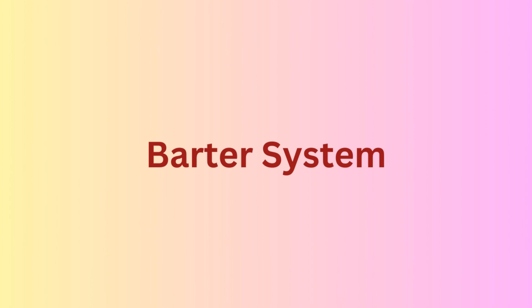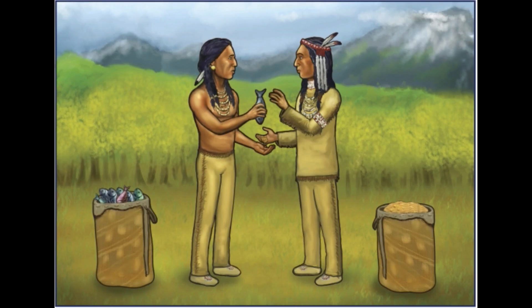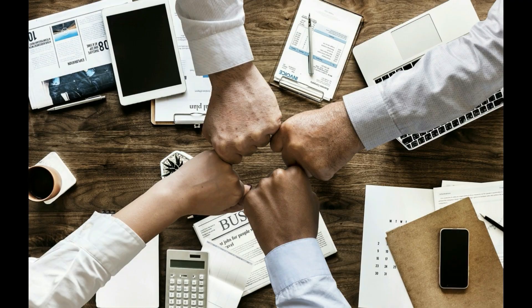Now let us see what is the barter system. Humans have been transacting in goods much before money was invented. The answer to how those transactions took place is the barter system. For example, suppose Satya has two bags of wheat but needs only one, and Ahmad has two bags of rice and can spare one. They meet and exchange one bag of wheat for one bag of rice. After the exchange, both Satya and Ahmad have one bag each of rice and wheat to match their food requirements. A simple example from daily life: you have sketch pens you don't need and exchange them for a geometry box.